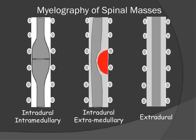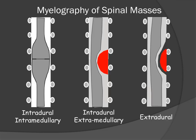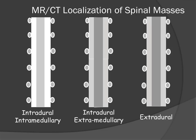If we have a lesion that is outside the cord but within the subarachnoid space, we have an intradural extramedullary lesion. And if we have an extradural lesion, it will displace the CSF column with contrast as well as the cord at the same time.